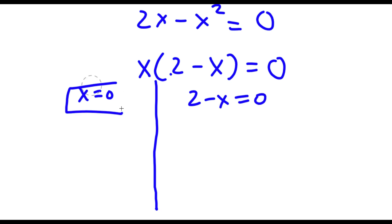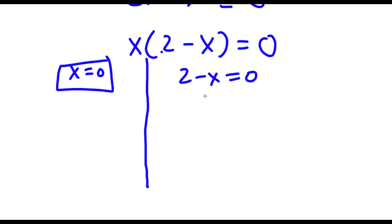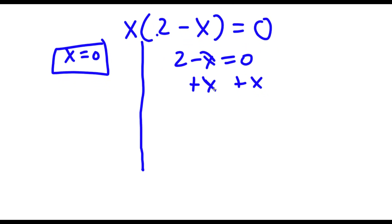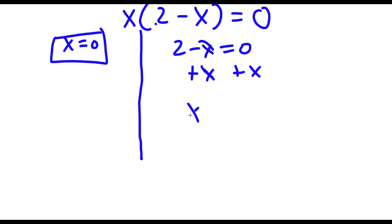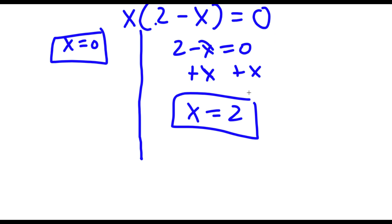I have x is equal to zero and I also have 2 minus x is equal to zero. So x equals zero — this is already a solution. For 2 minus x equals zero, all I have to do is add x on both sides and I get x is equal to 2. So these are two solutions to this problem.